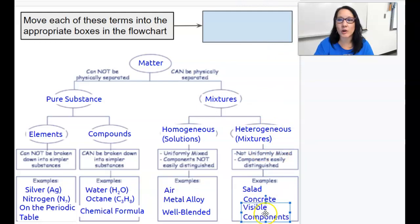And then everything that's left over—salad, concrete—are examples of heterogeneous mixtures. And the keywords there are that the components are visible; you can see them with your eyes. So here's the flowchart for classifying matter. Hope this helped.